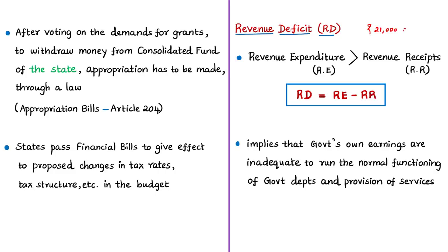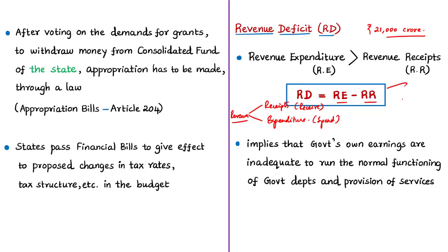The revenue account contains revenue receipts and revenue expenditure. Revenue deficit refers to the case where revenue expenditure exceeds revenue receipts — your spending is more than the money you receive. Subtracting revenue receipts from revenue expenditure gives the value of revenue deficit. Revenue deficit implies that the government's own earnings are inadequate to run the normal functioning of government departments and services.